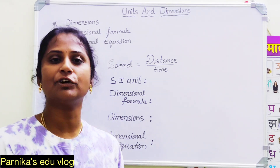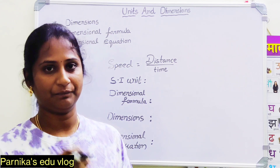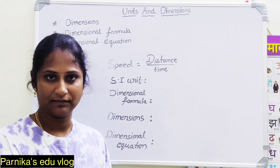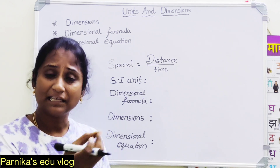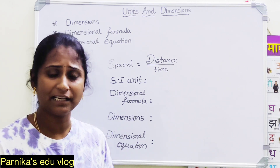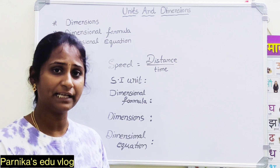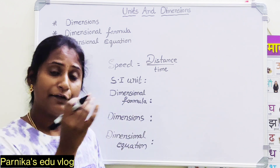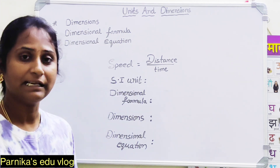Speed is a physical quantity. What is the formula for speed? Distance by time. Then what is the SI unit for speed? Meter per second. Is it necessary to memorize the SI unit for speed? Not only for speed, but for any physical quantity like velocity or acceleration — is it necessary to memorize the SI unit? No need. If you know the definition, it is easy to write the formula, and if you know the formula, it is easy to write the SI unit also.